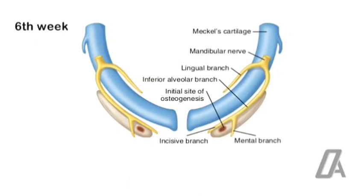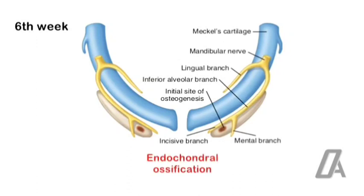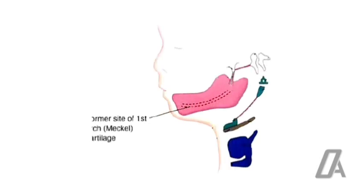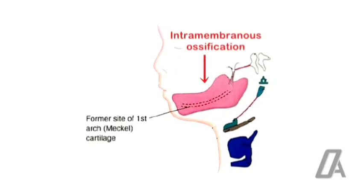At about the sixth week, the cartilaginous rods begin to chondrify, which is continuous from the malleus region to the future symphysis. The rods are separated in the midline and support the forming skeletal framework of the mandible. The part of the mandible mesial to the mental foramen undergoes endochondral ossification, whereas lateral to the mental foramen undergoes intramembranous ossification. The process of ossification proceeds anteriorly and posteriorly, with posterior intramembranous ossification forming the rest of the body and the ramus of the mandible.